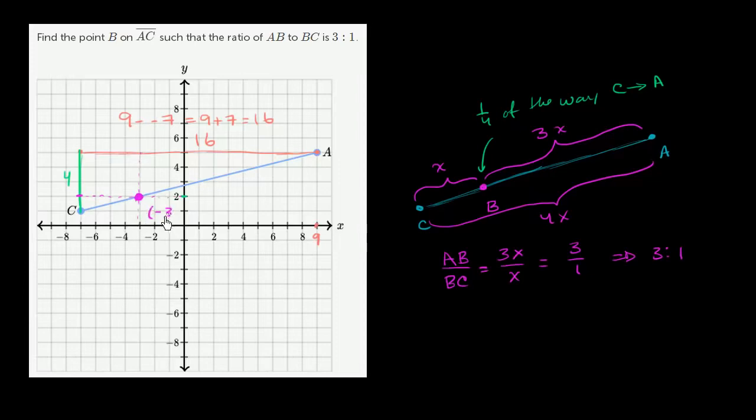So we end up at that point right over there. We end up at this point. This is the point negative 3 comma 2.